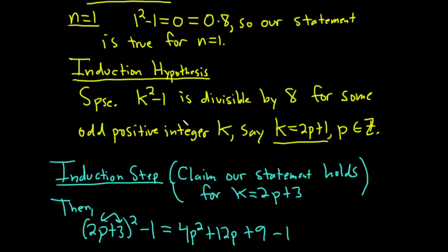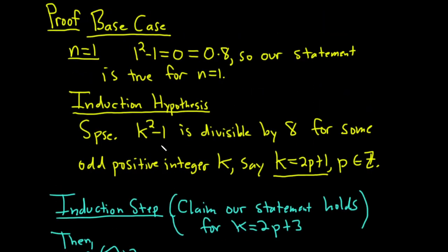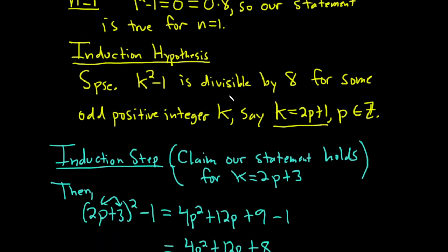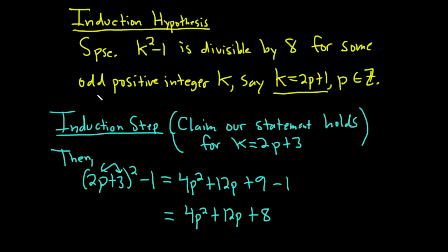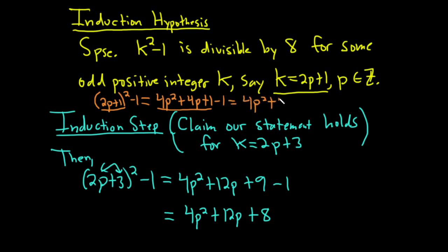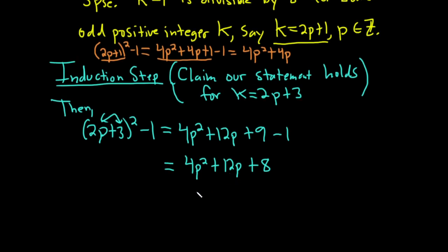Now let's think about what we're trying to show. We know from the induction hypothesis that k squared minus 1 is divisible by 8. Since k equals 2p plus 1, that means 2p plus 1 squared minus 1 equals 4p squared plus 4p plus 1 minus 1, which is 4p squared plus 4p, and this is a multiple of 8. So in our expression, we borrow 4p from the 12p to write it as 4p squared plus 4p plus 8p plus 8.